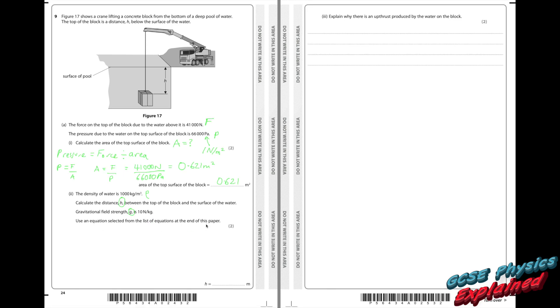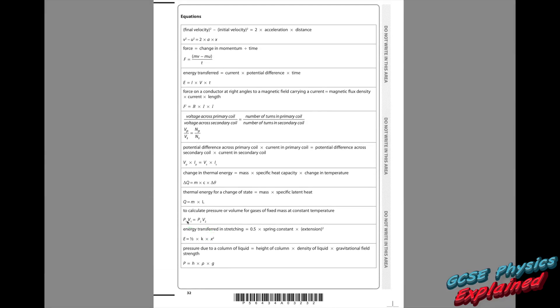Use an equation selected from the list of equations at the end of the paper. Right, let's have a look. Right, there it is. H, wiggly p for density, gravity, gravity. And that's pressure.